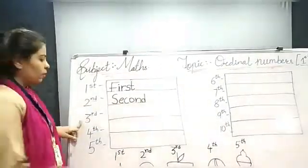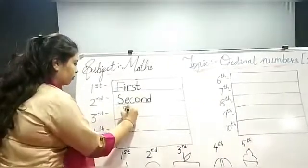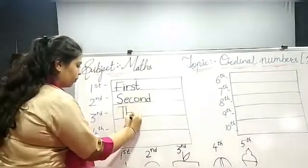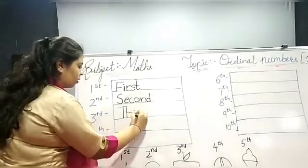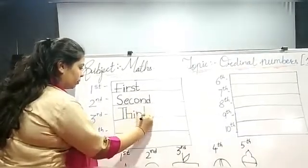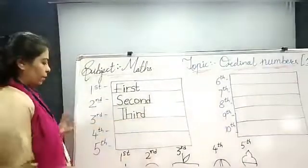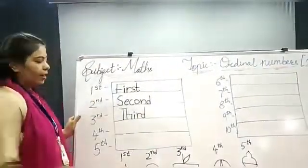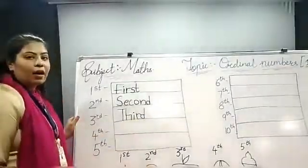Now, 3rd. So, T, H, I, R, D — Third. आपको दिखा है, 3rd में क्या है? Last में R, D. And आपे place में क्या है? R, D.